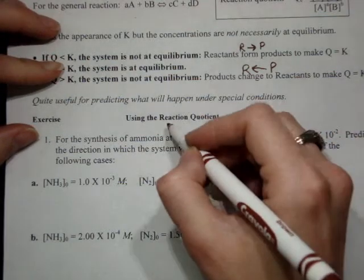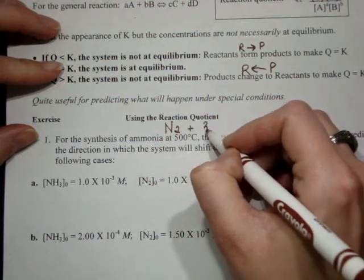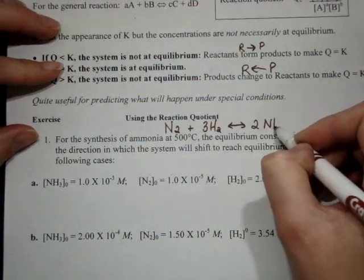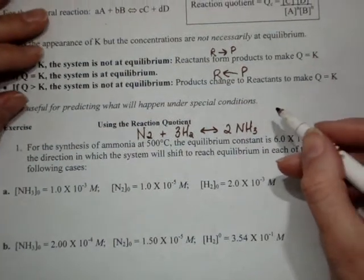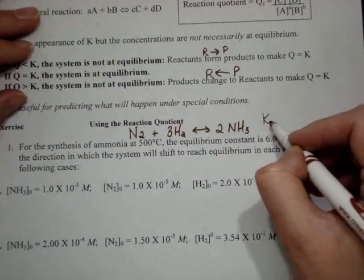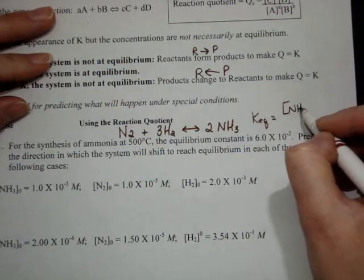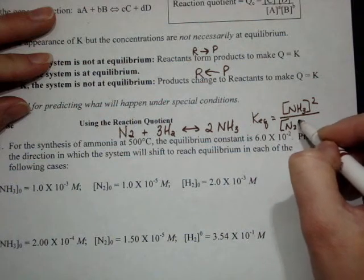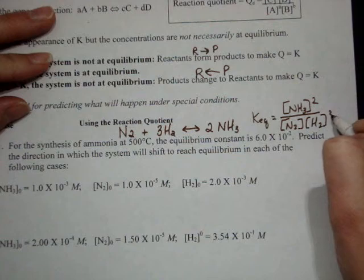First thing that we need is we need an equation. Synthesis of ammonia is nitrogen plus 3 hydrogen yields 2 NH3, which means our K expression is NH3 squared over N2 times H2 cubed, and they're all gases.